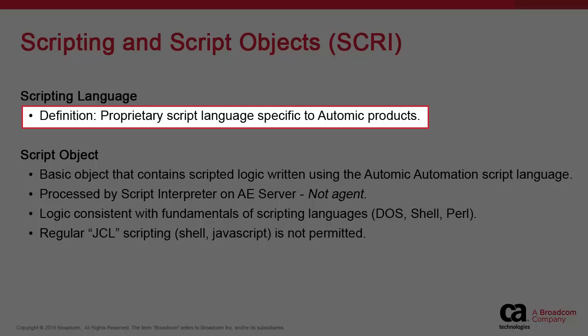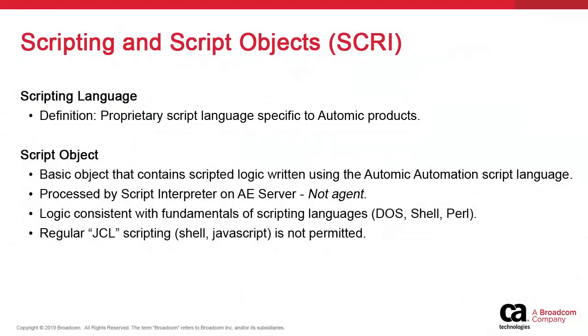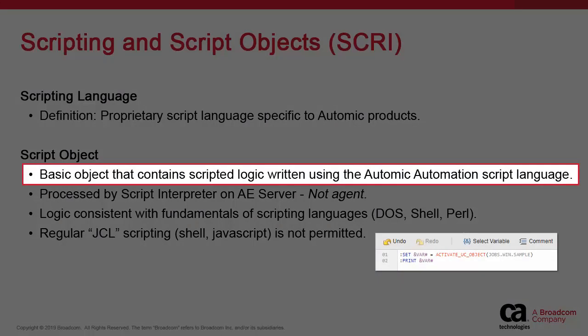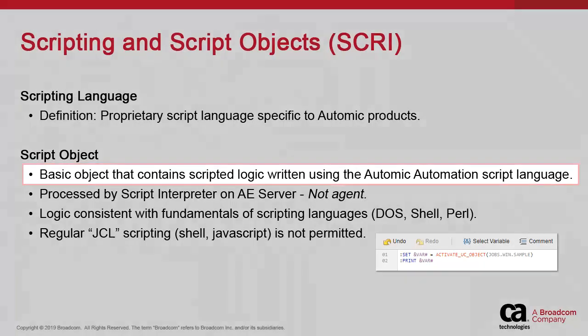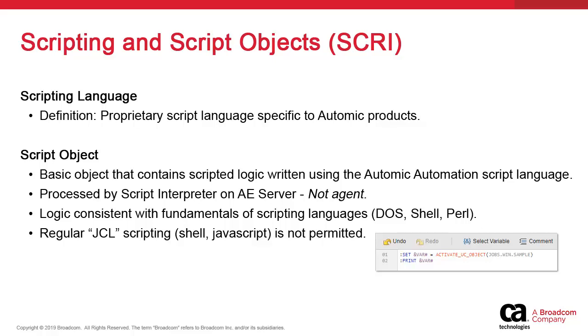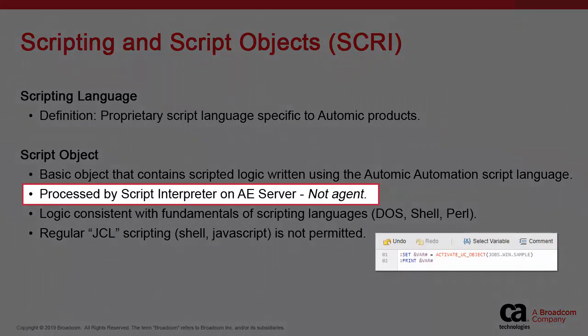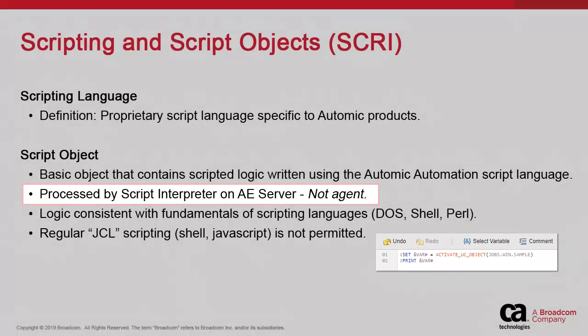Scripting logic can be included in any object as part of the process phase. This logic can also be stored in an object designated strictly for that purpose, called the script object. You can create a script object to store a set of common logic that can be used repeatedly throughout the product. When the object is executed, this additional logic will be processed by the script interpreter on the AA server. It never executes on the agents.